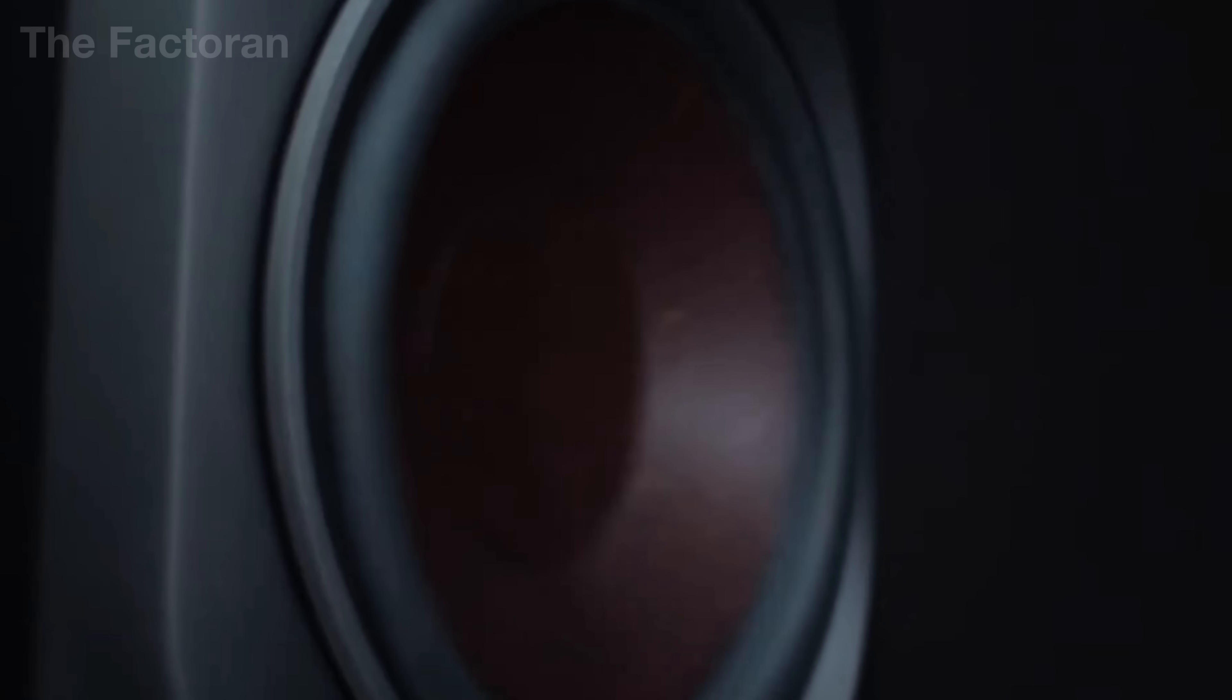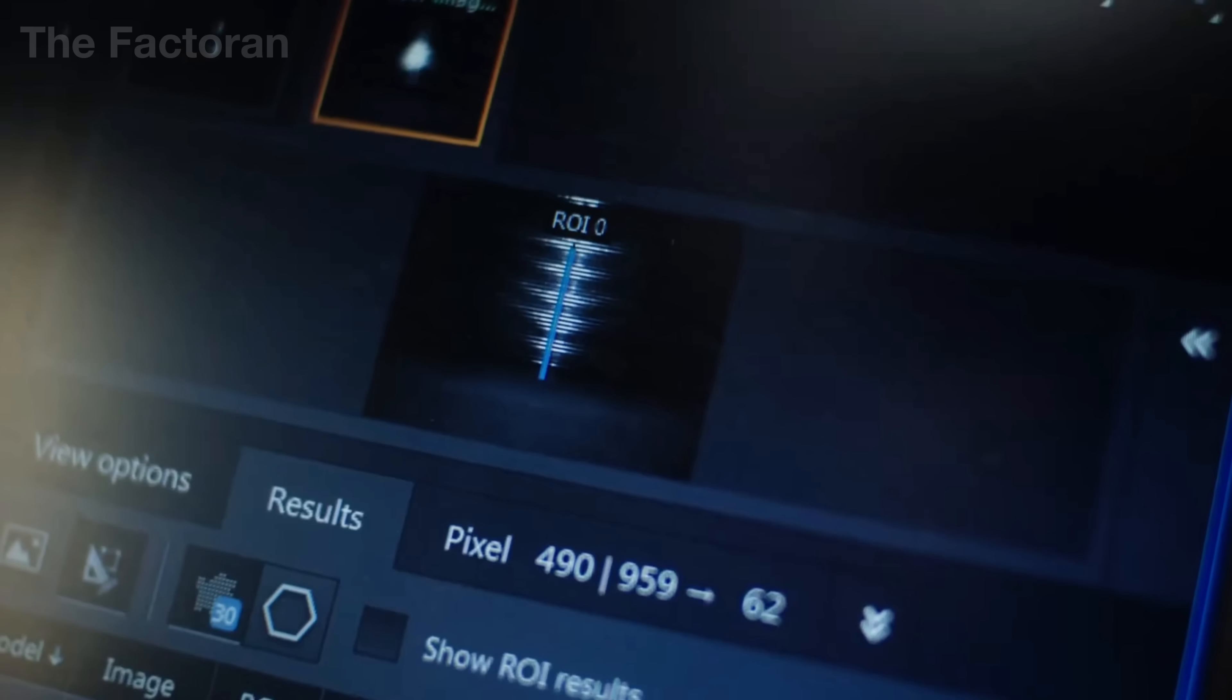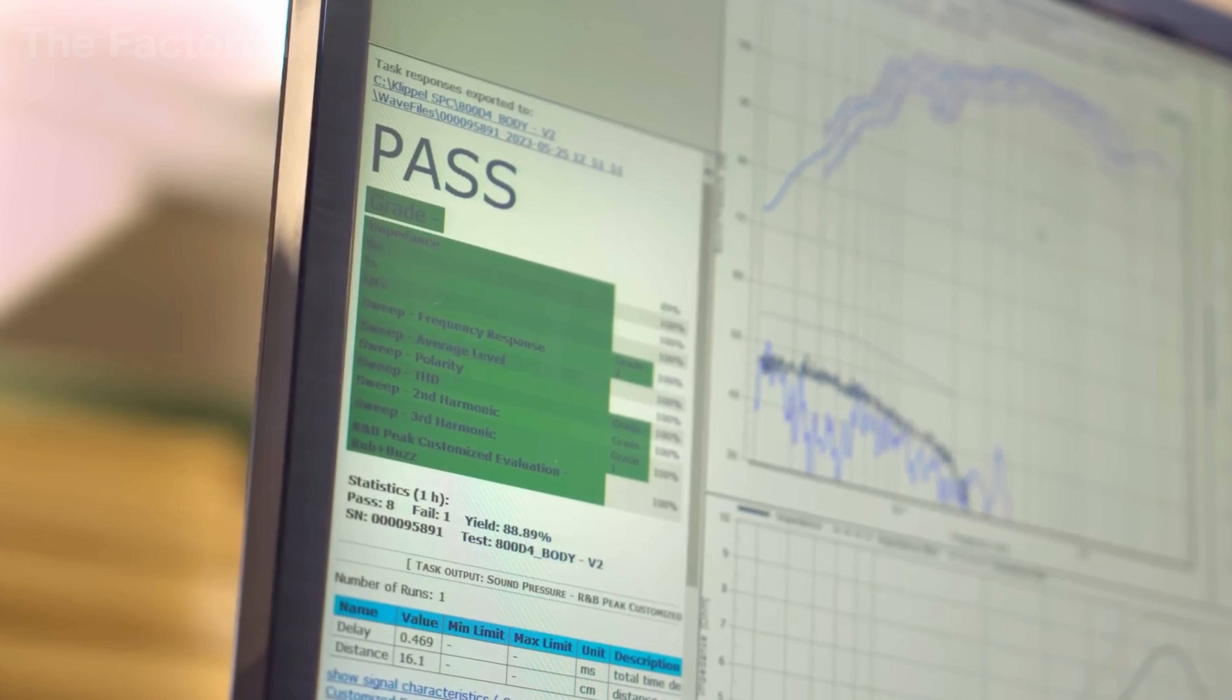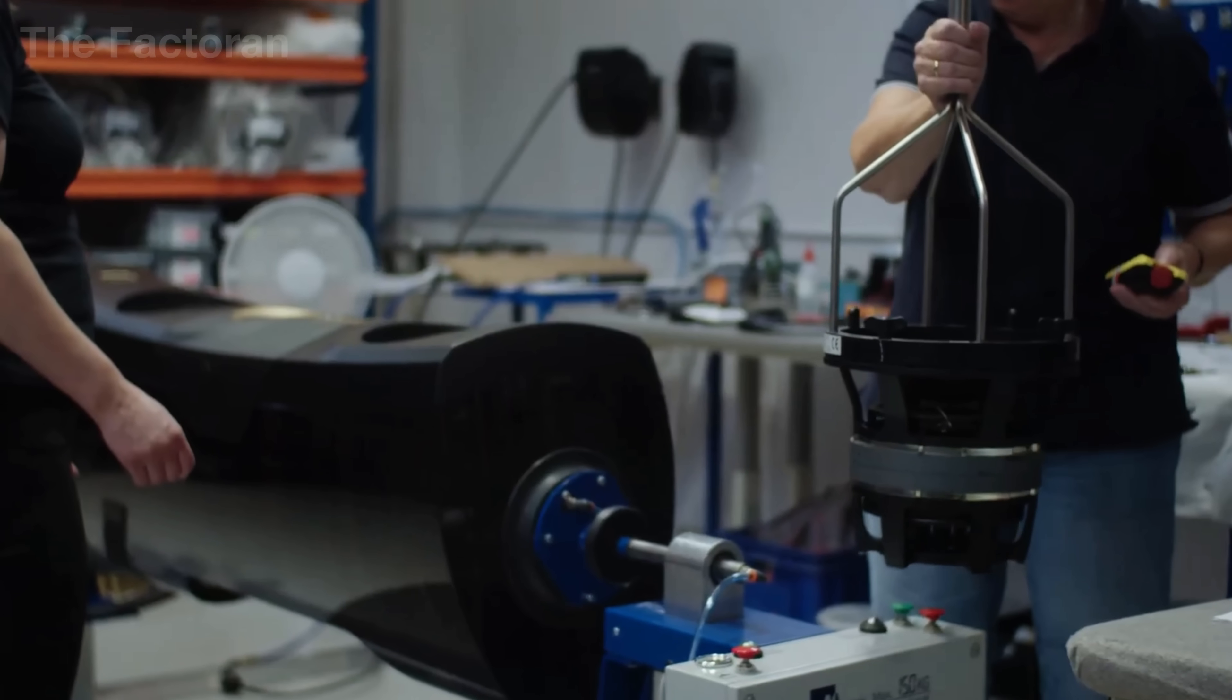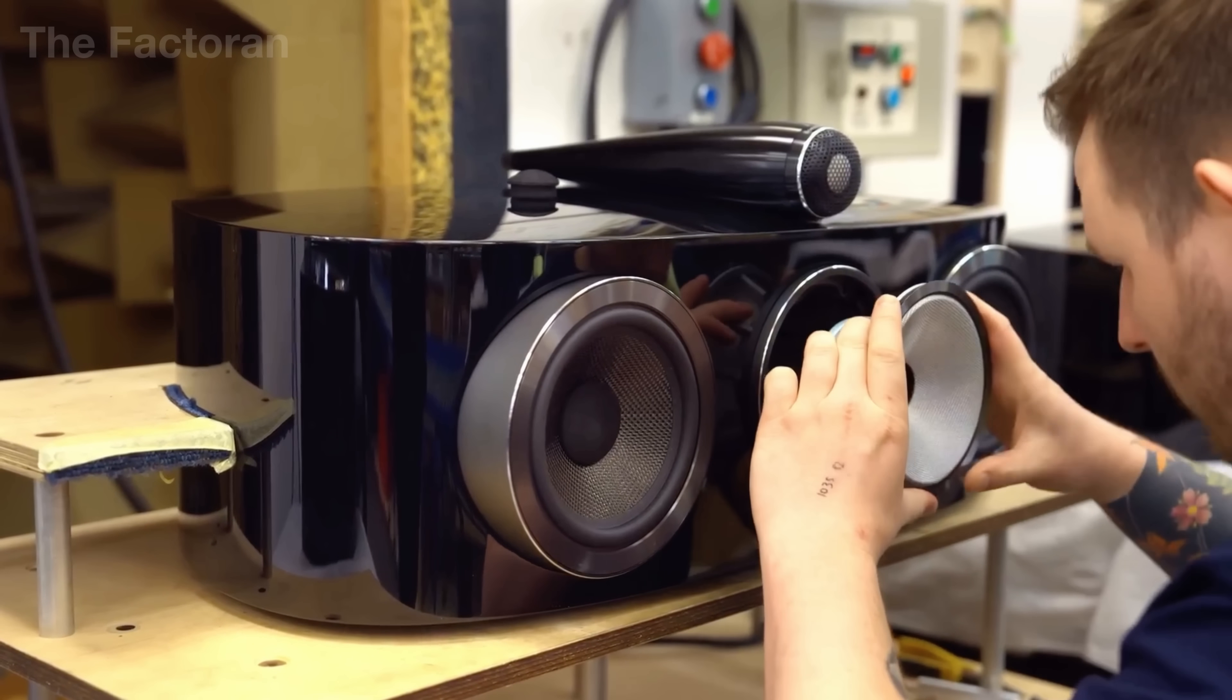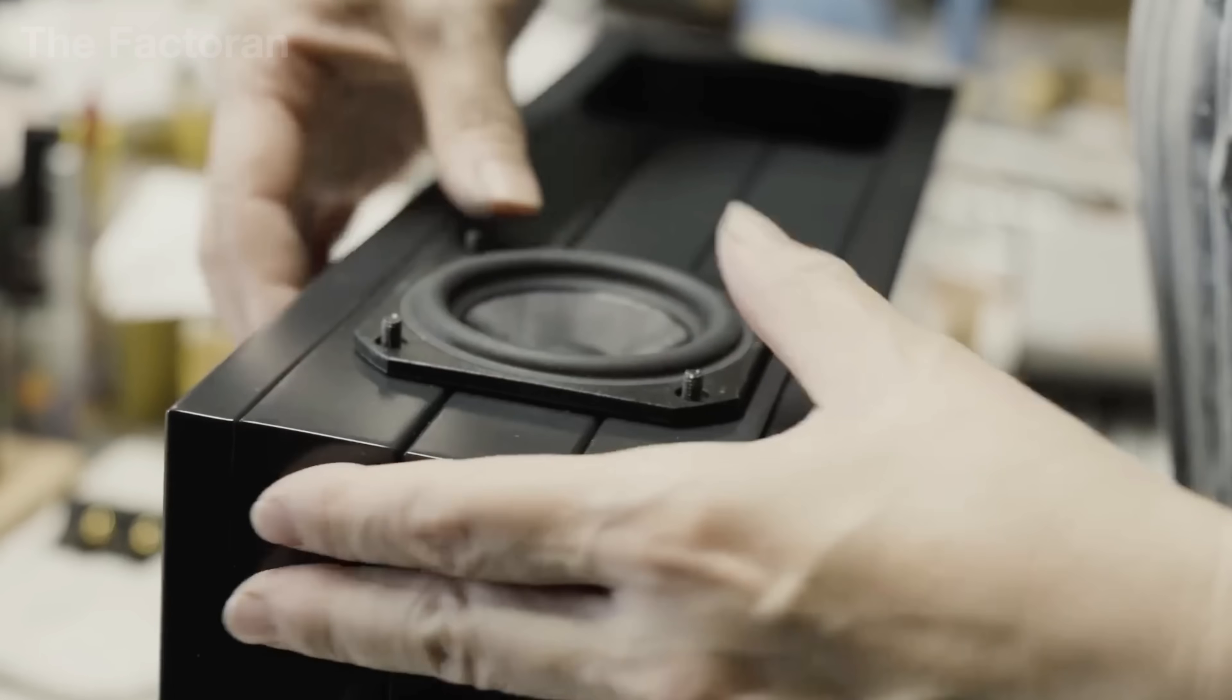The loudspeaker then moves into the testing phase. Each unit is scanned for mechanical resonance using vibration sensors, and selected samples are placed inside an anechoic chamber for full frequency response measurement from 20 Hz to 20 kHz, comparing the result to a reference curve and rejecting anything outside tolerance.